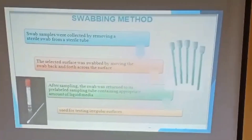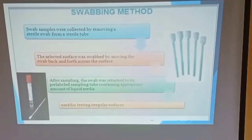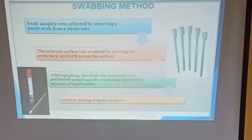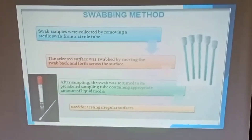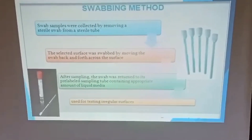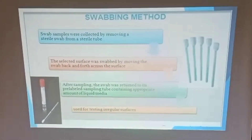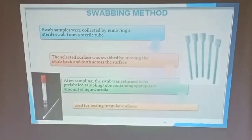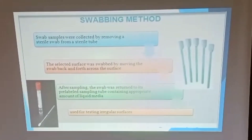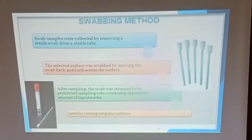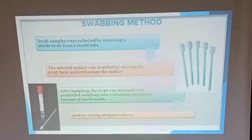In the swabbing method, swab samples are collected by removing a sterile swab from a sterile tube. The sterile surface is sampled by rubbing the swab to and fro, back and forth across the surface. After sampling, the swab is returned to a pre-labeled container with an appropriate amount of sterile liquid medium. This method is best used for irregular surfaces that are not smooth and regular.